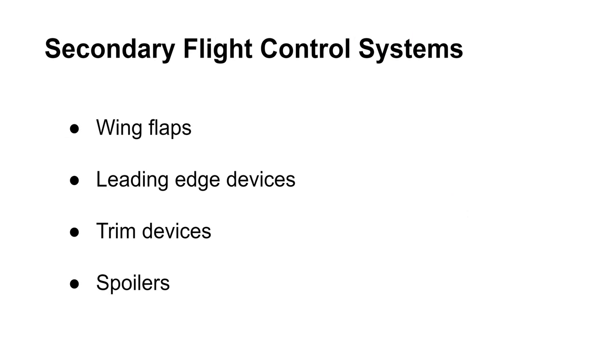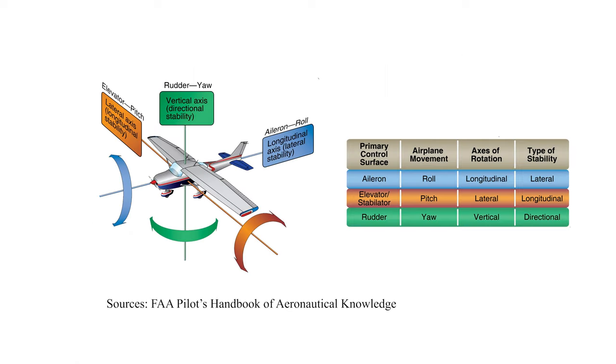There is also the secondary control system. It consists of various wing flaps, leading edge devices, trim devices and spoilers. They are there to improve the airplane's performance characteristics. You are unlikely to get tested on secondary control systems. Here is the table that summarizes primary flight control systems that we went over. Make sure you know this table well.